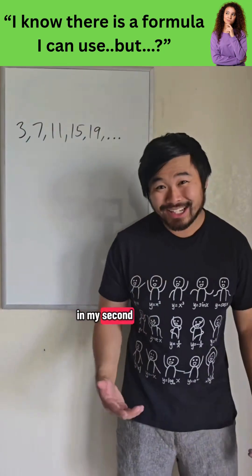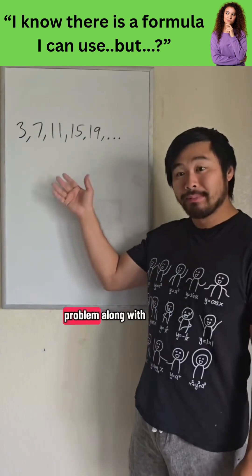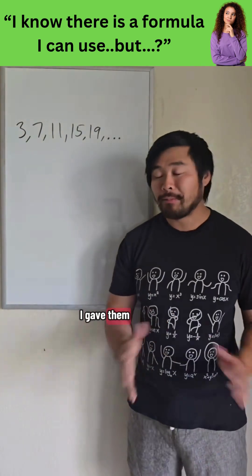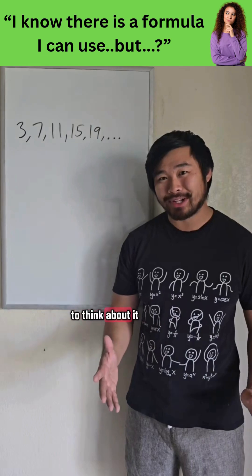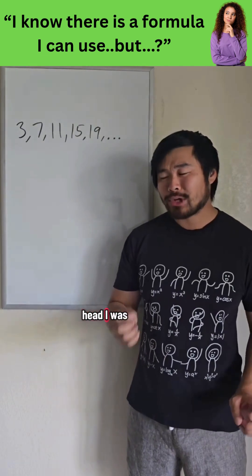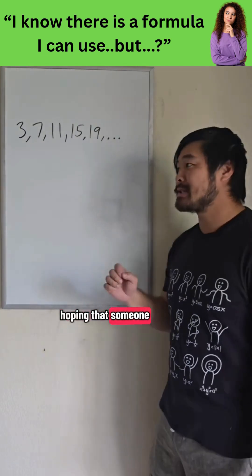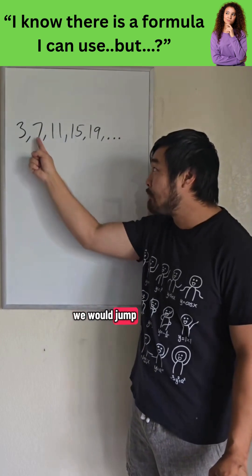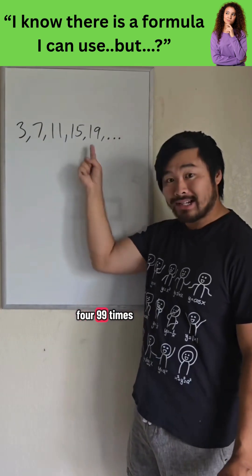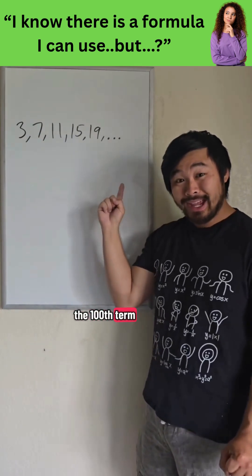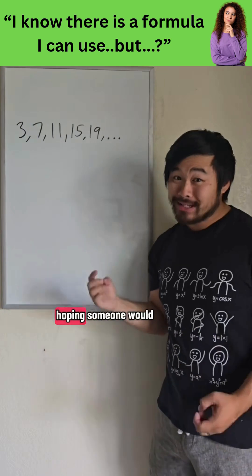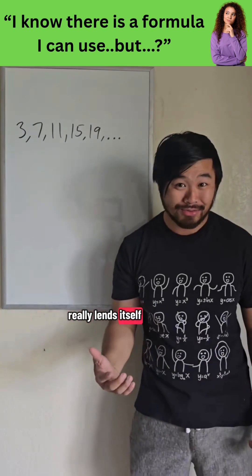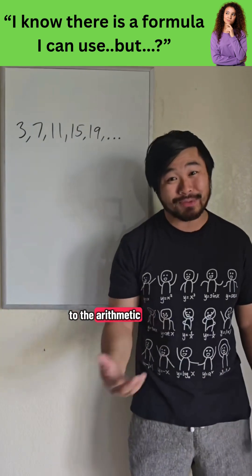In my second year of teaching, I gave this problem, along with a couple others, to my students. I gave them a couple minutes to think about it. In my head, I was hoping that someone would say, well, we would start at 3 and we would jump 499 times to get to the 100th term. I was hoping someone would say this, because that logic really lends itself to the arithmetic sequence formula.